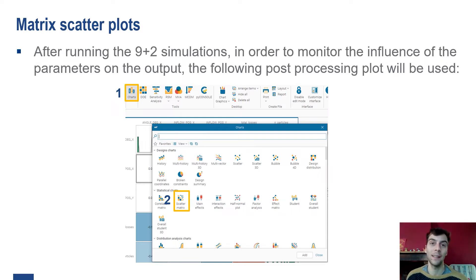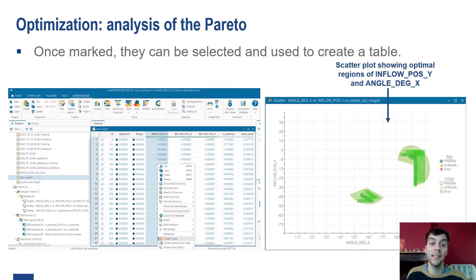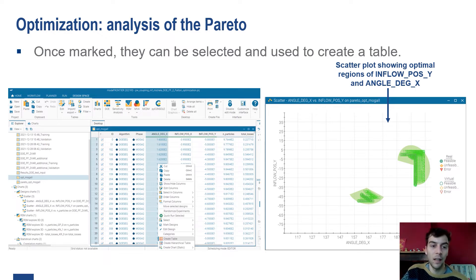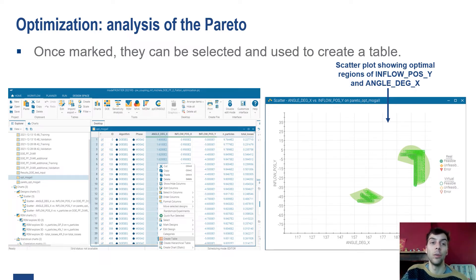We wanted to make sure that the design points we picked were as general as possible. To understand this, we can take only four points of the DOE and compare the results with the full nine DOE points. As you can see, there is a strong correlation between the total losses and the number of particles in the domain. This is expected because more oil results in more losses. And we can see that this correlation is already well captured with only four data points, allowing us to conclude that in the future we could avoid launching all simulations of the full factorial DOE.